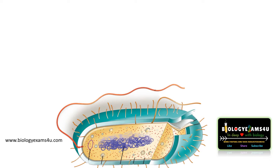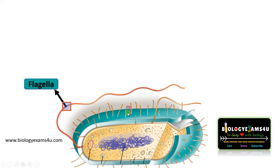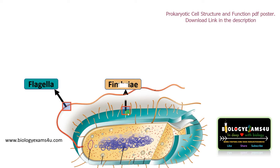Hi friends, hope you are fine. Today we have a short video on cell surface appendages in a prokaryotic cell. The first one is the long hair-like structure which is called the flagella. The second one is the short bristle-like structure which is called fimbriae, and the third one is longer than fimbriae but shorter than flagella, which is called pilus.